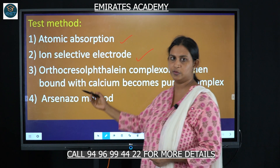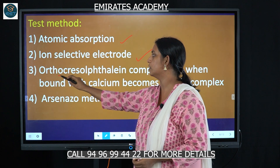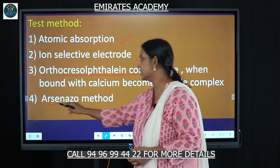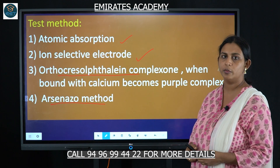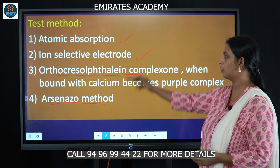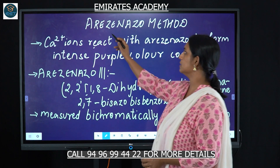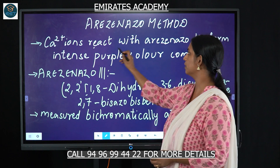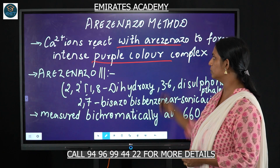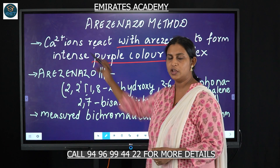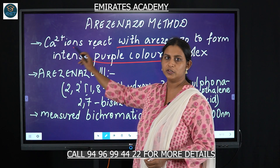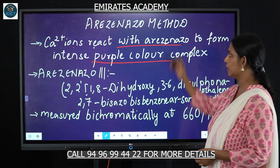Two common reagent-based tests are the ortho-cresolphthalein complexone method and the Arsenazo III method. In the Arsenazo III method, calcium ions react with the Arsenazo III reagent to form an intense purple-colored complex. The intensity of the purple color is directly proportional to the amount of calcium ions present in the serum.